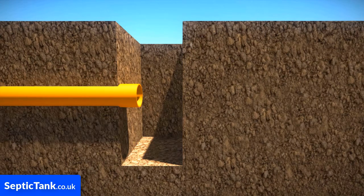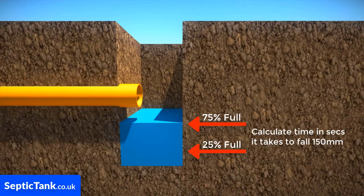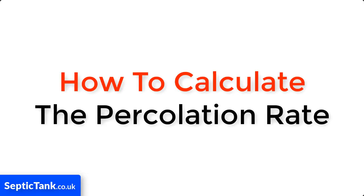The next day, refill the hole once again with water to a depth of at least 300 millimeters. Then observe the time in seconds that it takes for the water to seep away from 75 percent full to 25 percent full — that's roughly a fall of about 150 millimeters.